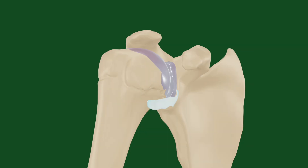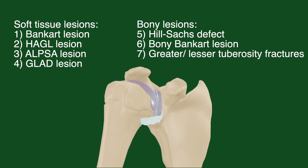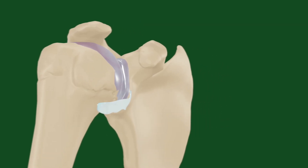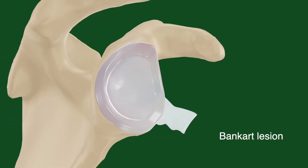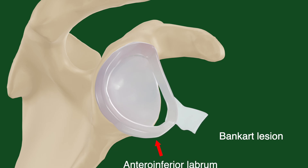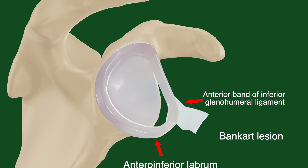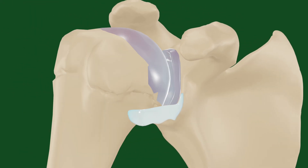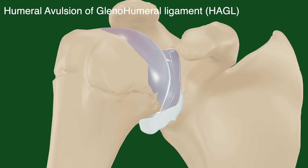Moving on to the pathologies that can result from these recurrent anterior dislocations, these can broadly be divided into soft tissue injuries and bony injuries. The most common soft tissue lesion is a Bankart lesion, which is an avulsion of the anterior labrum as well as the anterior band of the inferior glenohumeral ligament from the glenoid. Sometimes the anterior band of the inferior glenohumeral ligament can be avulsed from its attachment to the humerus rather than the glenoid — this is called a humeral avulsion of the glenohumeral ligament, or HAGL for short.